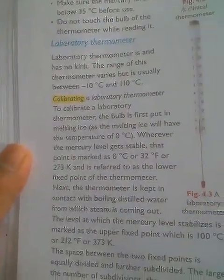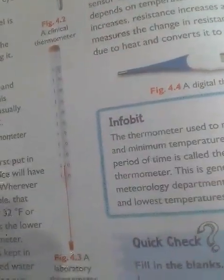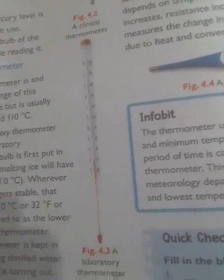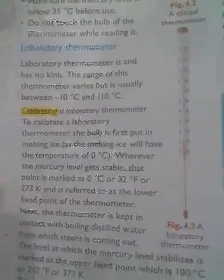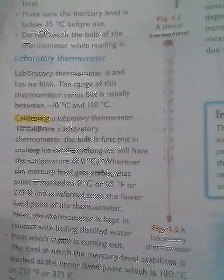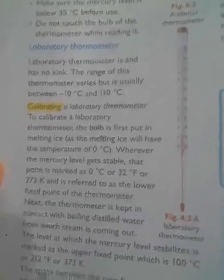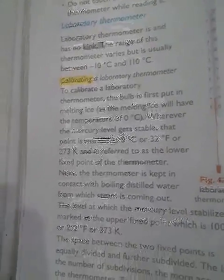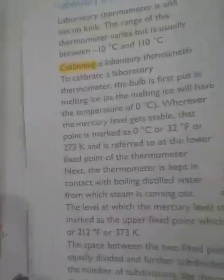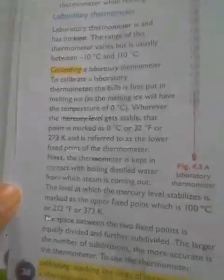Next, we have the laboratory thermometer. As you can see in the diagram, the range of the laboratory thermometer is from minus 10 degrees Celsius to 100 degrees Celsius. With this range, it is able to measure substances below freezing point as well as substances above the boiling point.